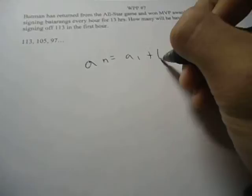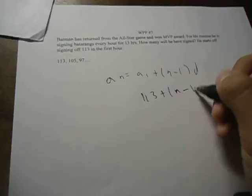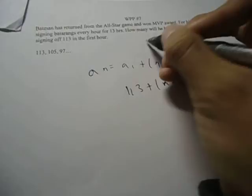We know a_1 is 113. Our n, we don't know it yet, minus 1. And our d is, we subtract 105 minus 113, that gives us negative 8, which is our common difference.